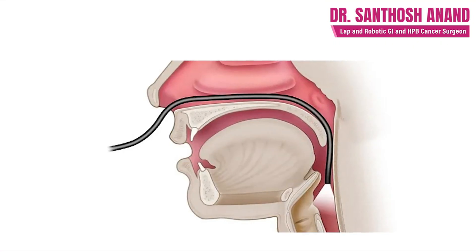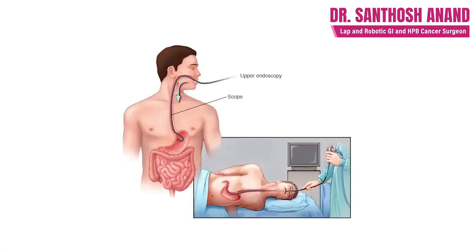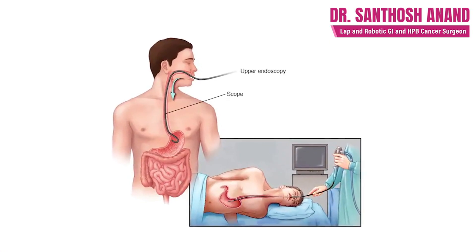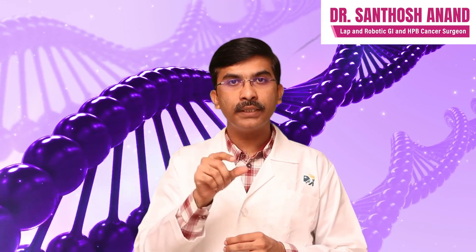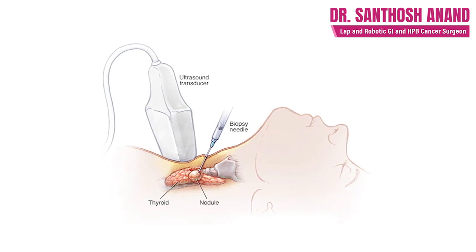Get an endoscopy done. Endoscopy is a small tube, less than a centimeter in diameter, which has a camera at the end. It goes through your mouth, through the throat, and into the food pipe to visualize whether any growth is present. If anything is found, we can determine the extent and take a sample called a biopsy, which is examined under a microscope to prove whether it is cancer or not.